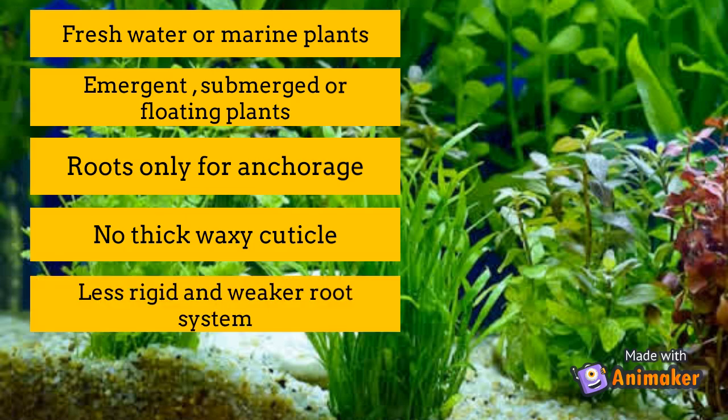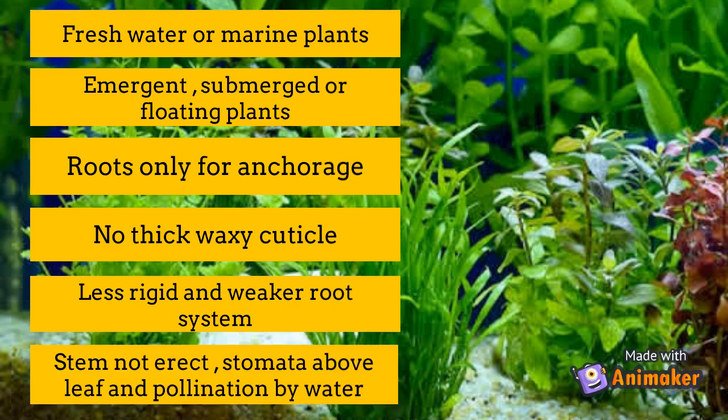They don't have thick stems, hence they are not completely erect. Their stomata are situated on the upper side of the leaf so that they can easily exchange gases during respiration. Pollination in water plants occurs through water. Don't forget to subscribe to get the latest notifications. In the next video we will discuss dichotomy, a classification tool.